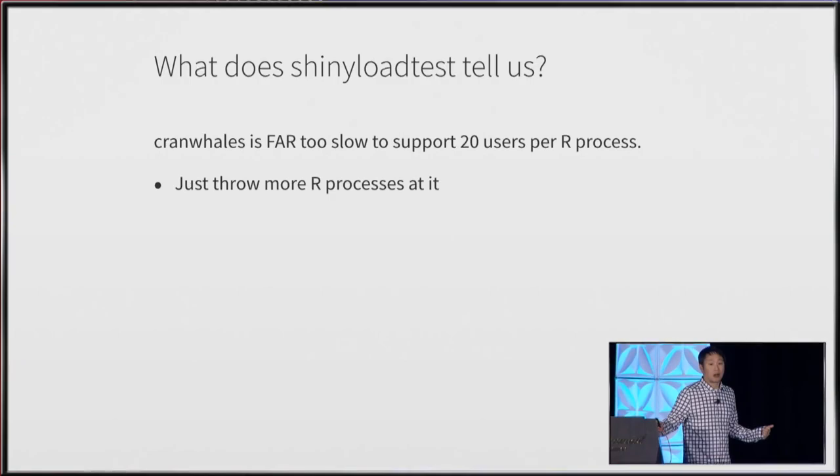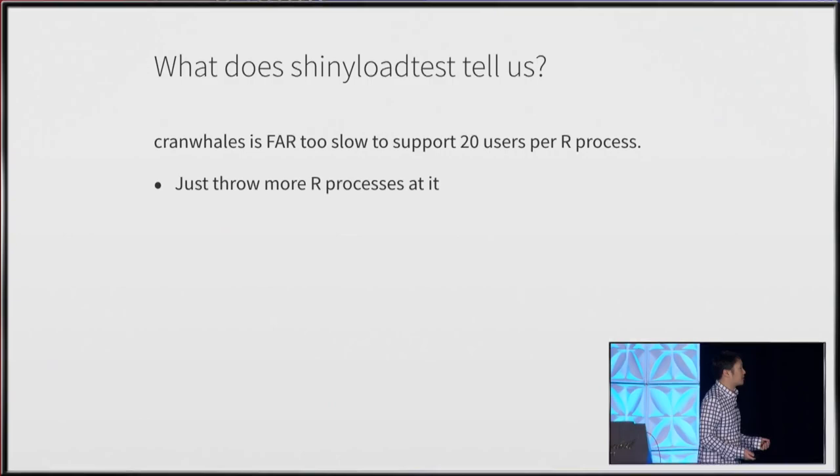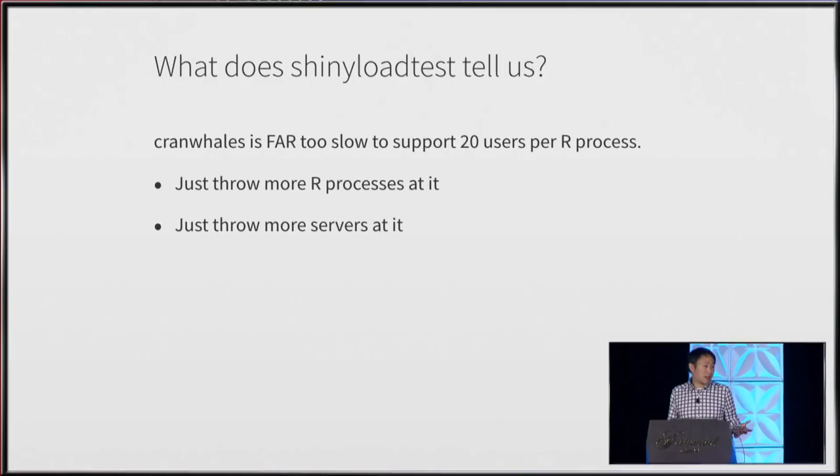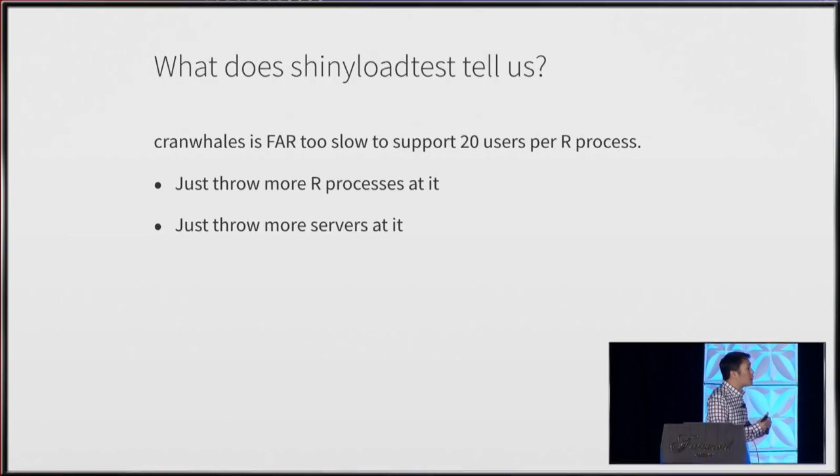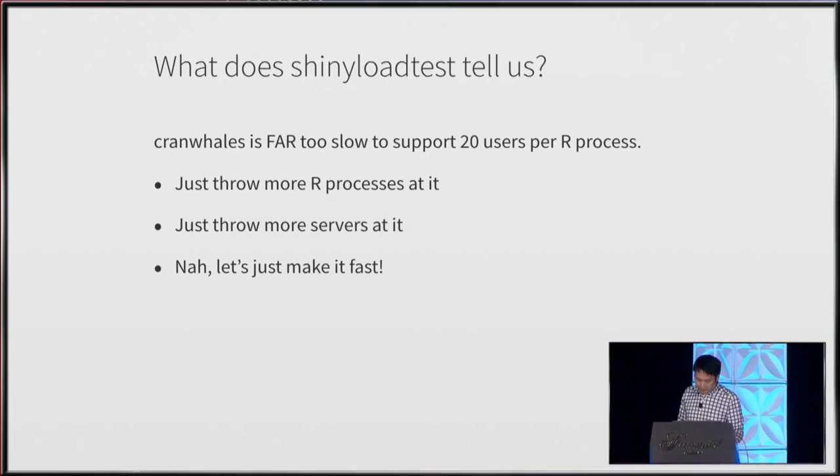This application is way too slow to support 20 users. We could throw more R processes at it — always an option — and if we run out of processes we can throw more servers at it. Google doesn't run on one machine; it runs on thousands. So we do always have the option of horizontal scaling. But let's just make it fast.